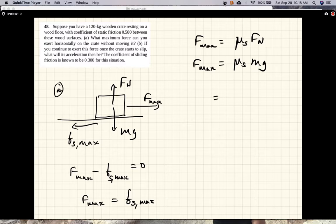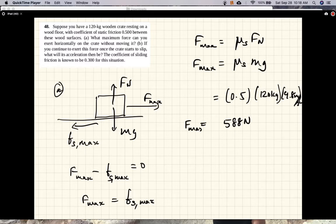Okay, so that's 0.5 times 120 kg times 9.8 meters per second squared. So that's 588 N. So that's the maximum force you can apply before the box will start moving.